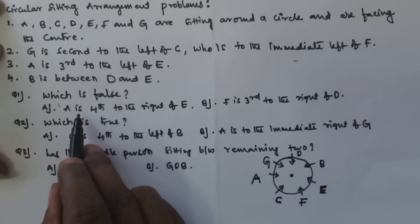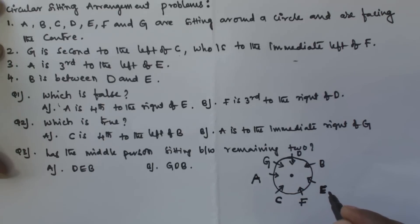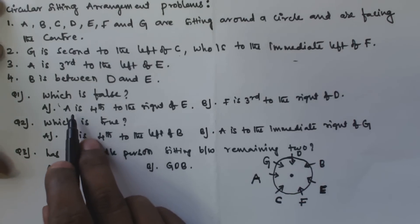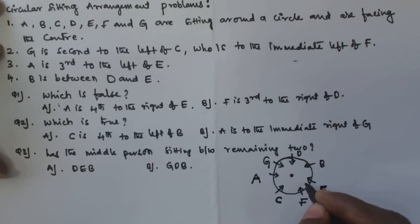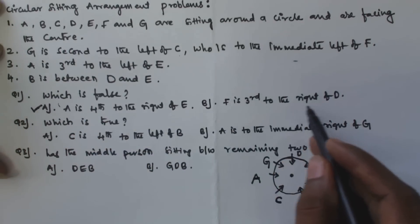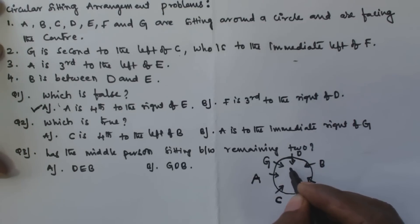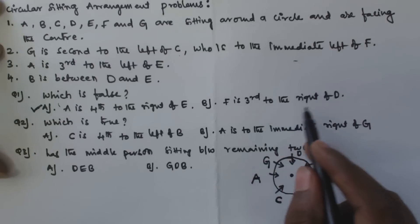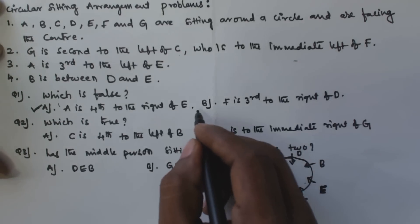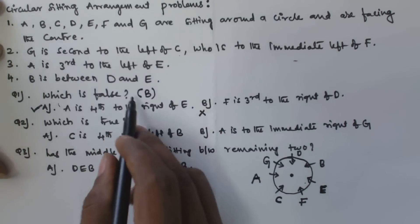For question one, checking option A: A is fourth to the right of E. E faces the center, counting right — one, two, three, four — the fourth position is indeed A, so option A is true. Checking option B: F is third to the right of D. Counting three positions to the right of D, we actually get C, not F. So option B is false. The answer for question one is B.